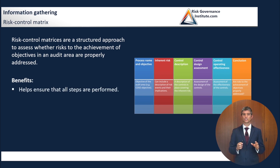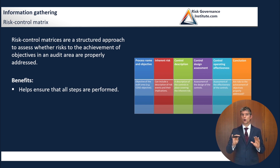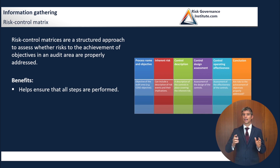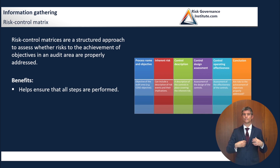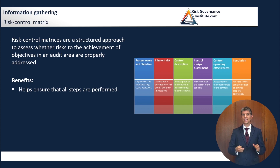It helps ensure that all steps are performed. Basically, the way that you have this is that you're going to list your different objectives and process names, and it's going to lead to a different kind of assessment of the controls and assessment of their operating effectiveness. Going through this procedure makes sure that you are covering all the different steps that you need to cover.